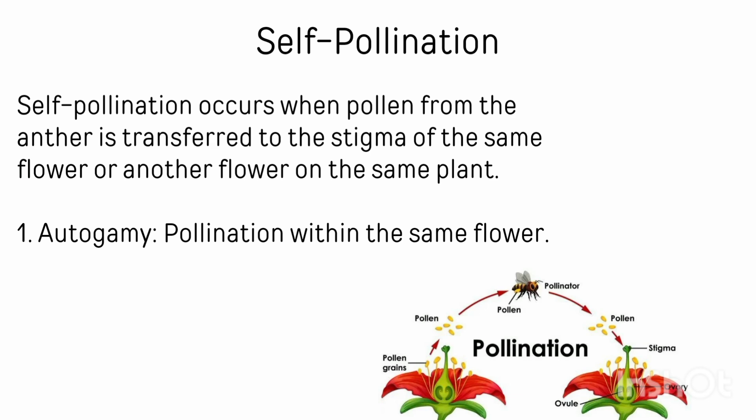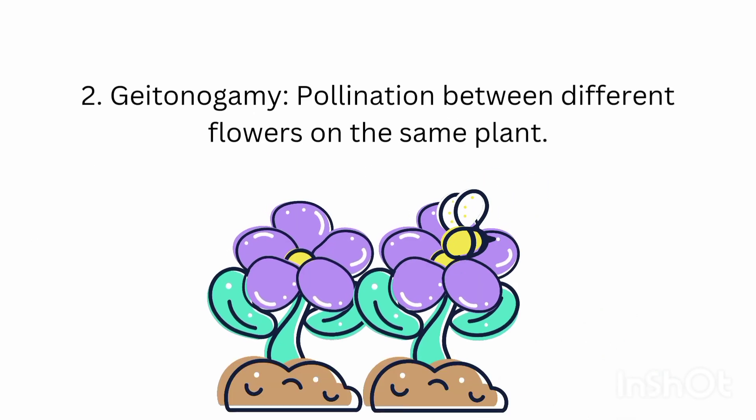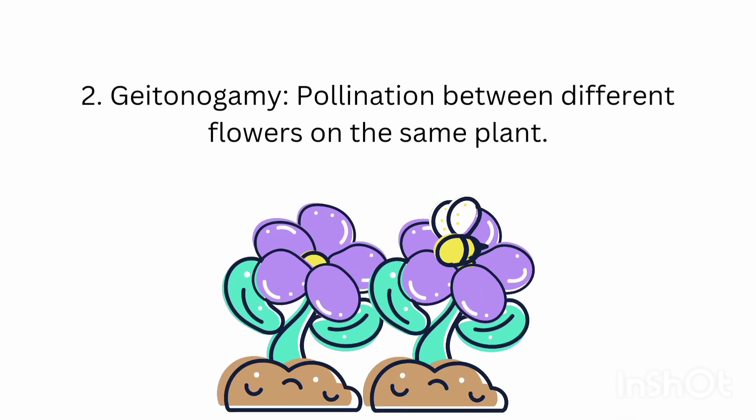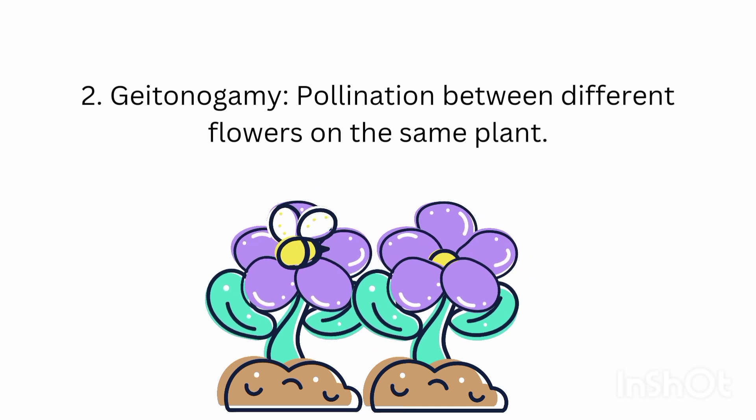First we talk about self-pollination. Self-pollination occurs when pollen from the anther is transferred to the stigma of the same flower, or another flower on the same plant. Autogamy is pollination within the same flower. Geitonogamy is pollination between different flowers on the same plant.